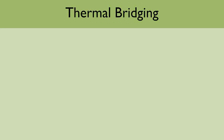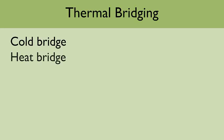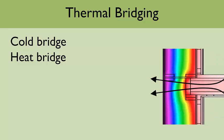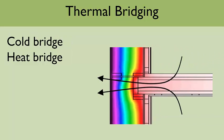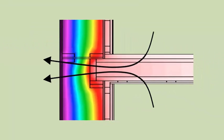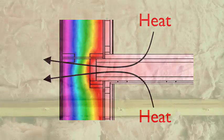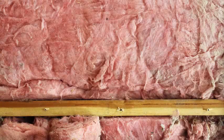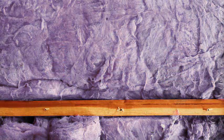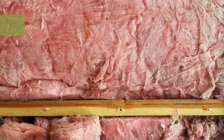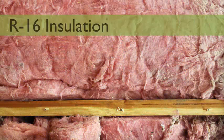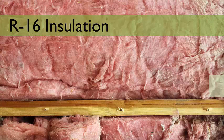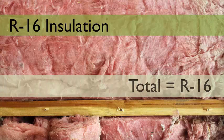Thermal bridging. A thermal bridge, also called a cold bridge or heat bridge, is an area of an object, frequently a building, which has a significantly higher heat transfer than the surrounding materials, resulting in an overall reduction in thermal insulation of the object or building. It's easy to look at the R-value rating of a material and assume that our entire wall assembly matches it uniformly.